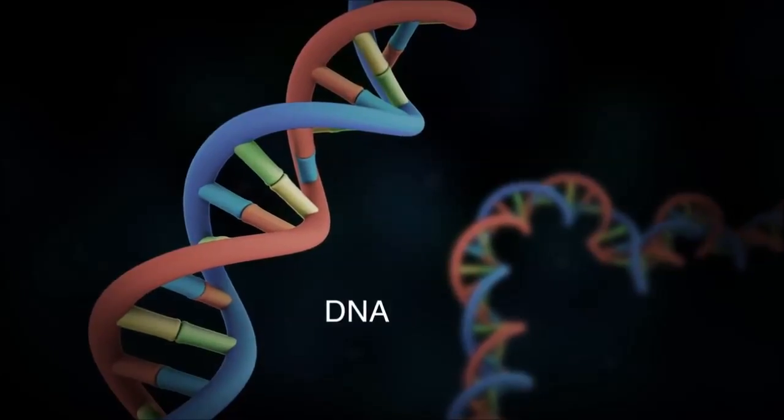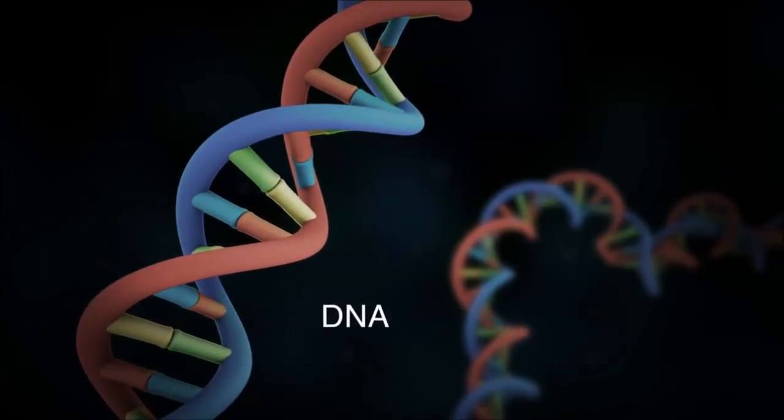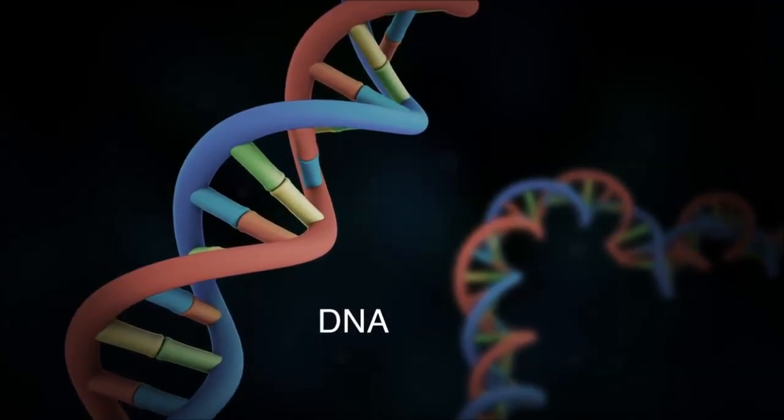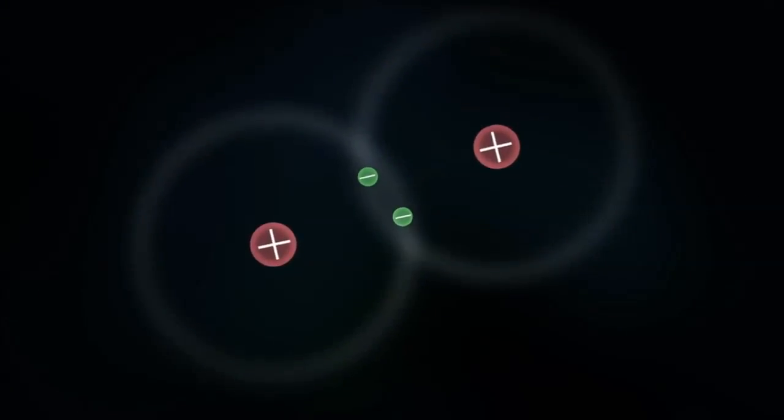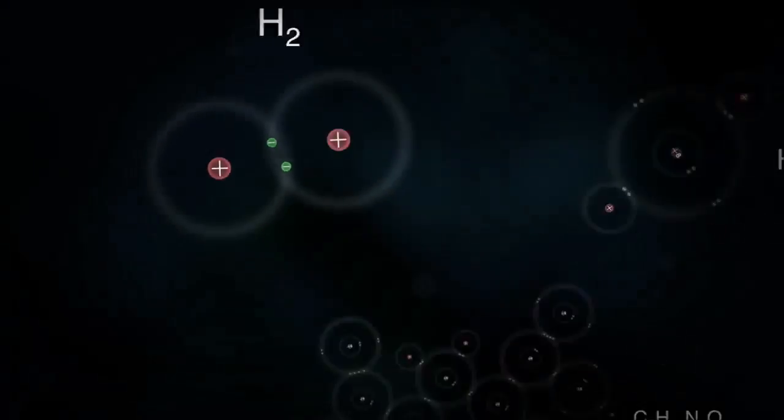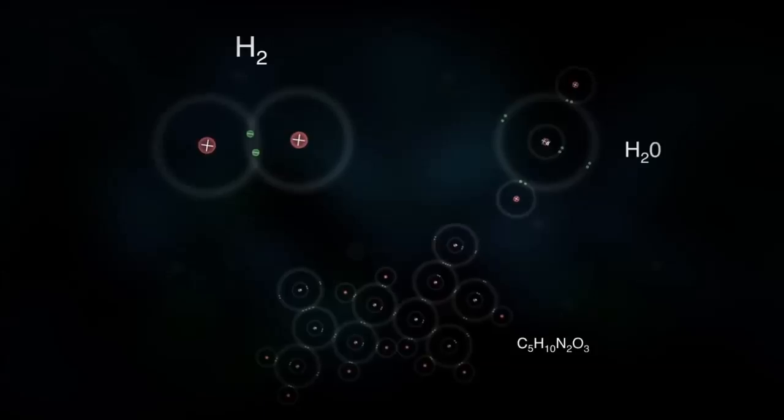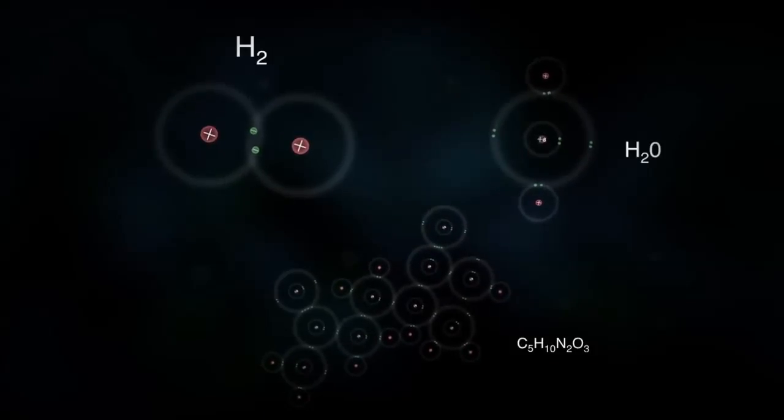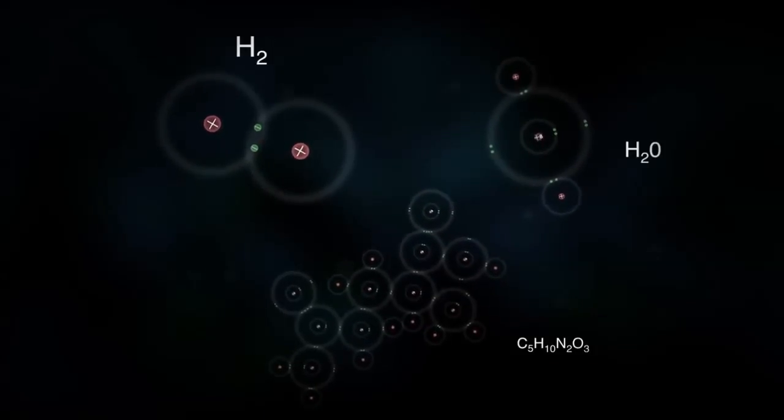The proteins and DNA in our bodies, for example, are held together largely by these covalent bonds. Some atoms can covalently bond with just one other atom, others with many more. The number of other atoms one atom can bond with depends on how its electrons are arranged.